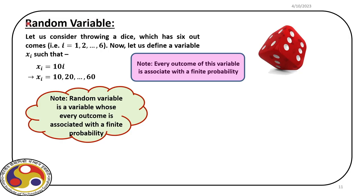Let us explain the concept of random variable using a dice example. If you throw a dice, one number will appear on the upper face and that number varies from 1 to 6. The sample space has 6 different possibilities, which are exhaustive, equally likely, and mutually exclusive. The probability of getting any specific number, say 2, is 1/6, and all outcomes have equal probability of 1/6.